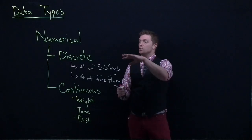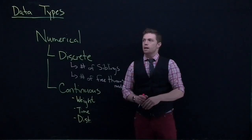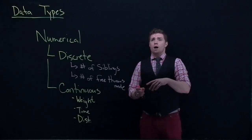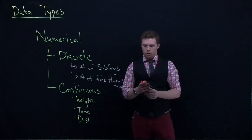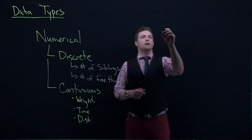Those are kind of some of the basic definitions of our numerical types of data. Now the other major type of data that we have is called categorical.